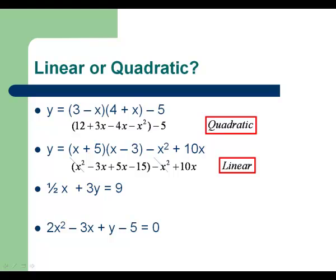On the next one, you have a regular x, no squaring, no FOILing that needs to be done. This is a linear equation. On the last one, you have an x squared term, nothing's going to cancel, therefore it's a quadratic equation.